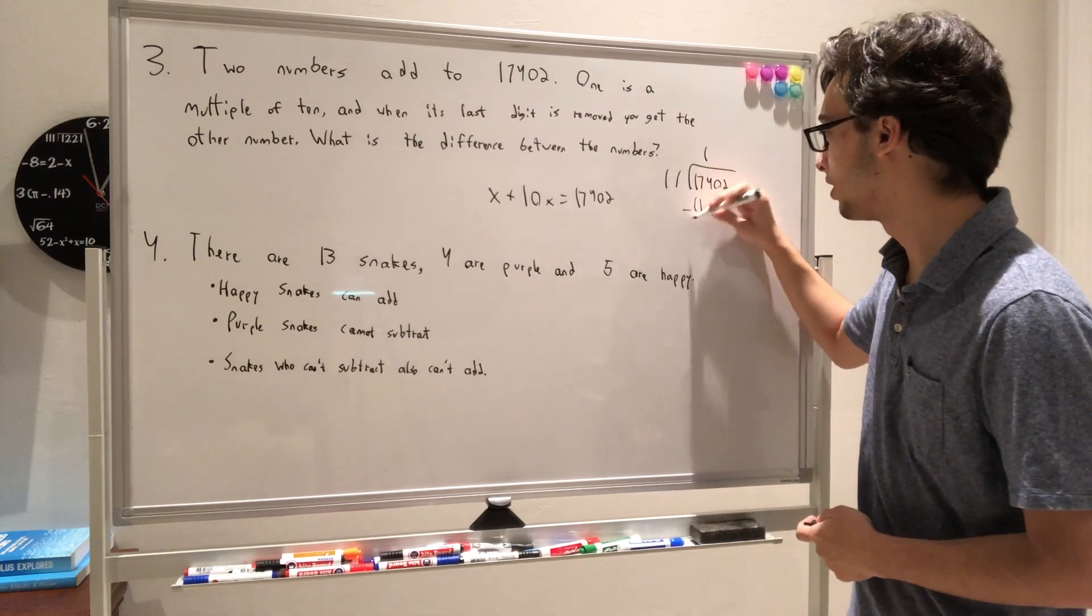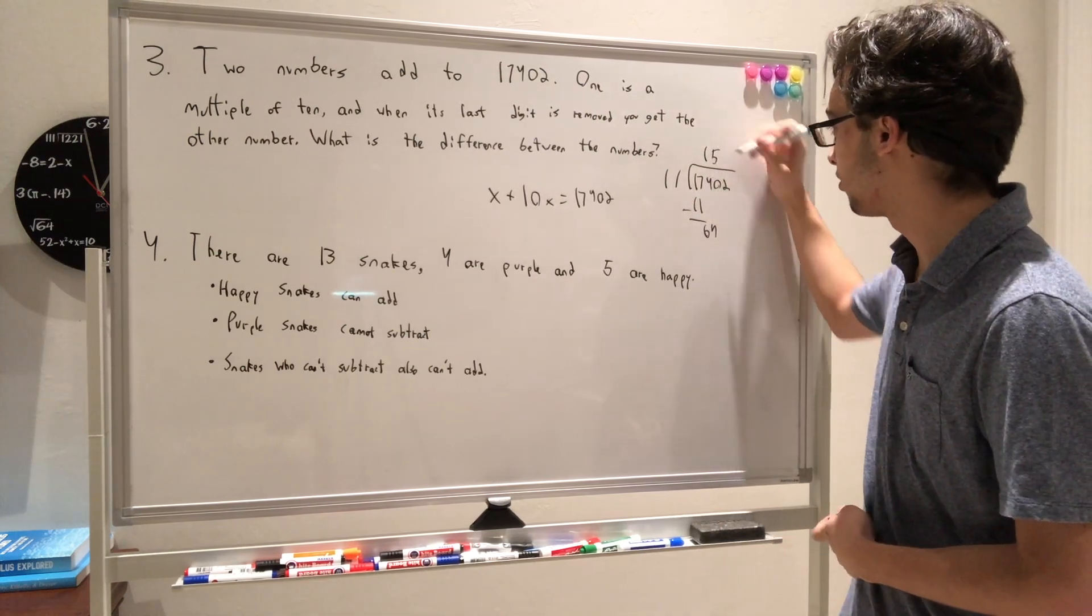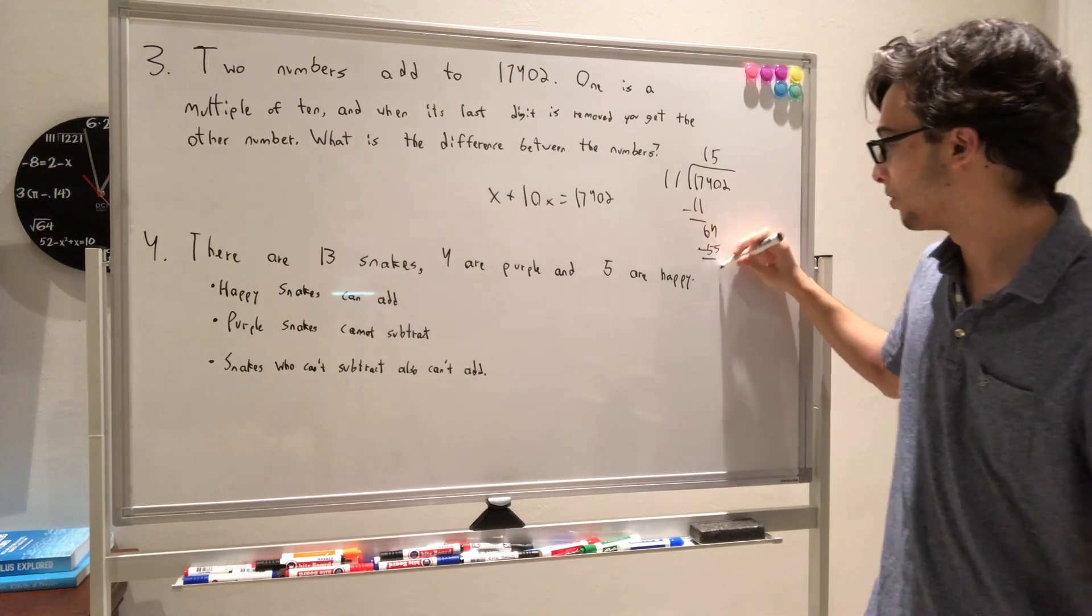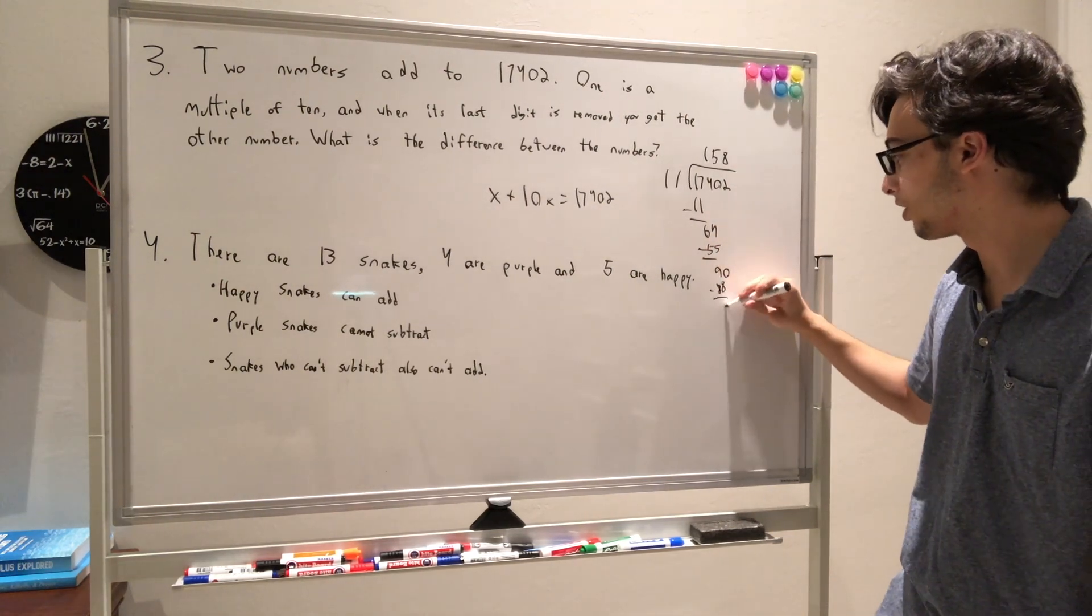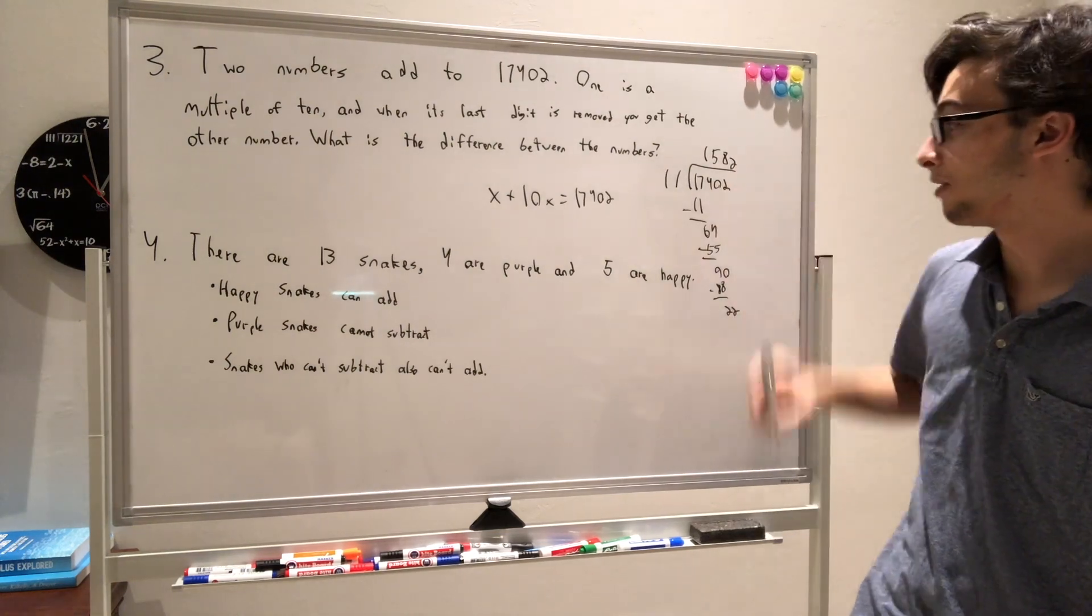So we have 17,402 divided by 11. It's going to give us a 1, 11, bring down a 6, 4, 5, 55. It's going to give you 9, 0. It's going to give us an 8. So 88, bring down a 2, and you're going to have a 2. So it's going to be 15,82.